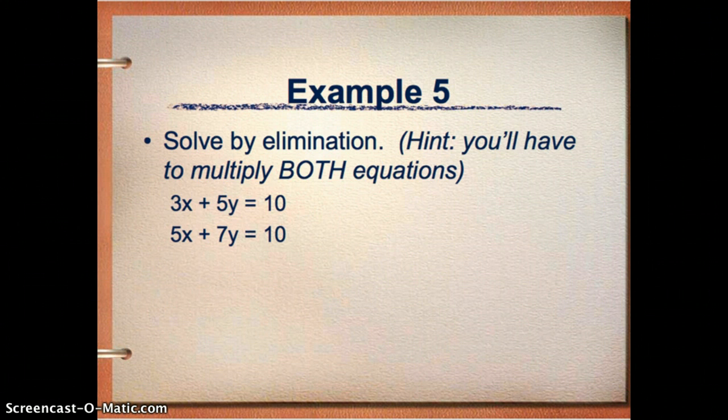All right. Last problem. This would be the hardest type of problem that you would probably have when you're trying to solve it by elimination. A hint that's happening is you're going to have to multiply both equations. The reason why this is hard is because 3 is not a factor of 5 and 5 is not a factor of 7. So it's not really easy to come up with something to eliminate one of the variables.